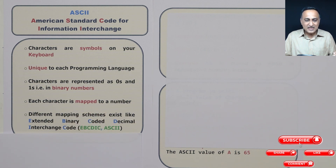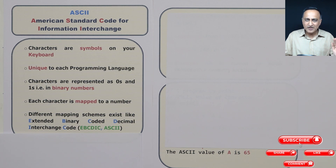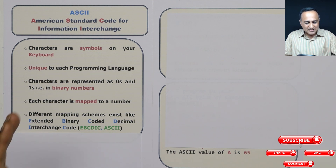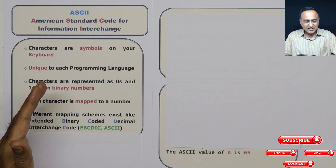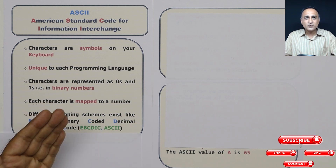There are different schemes used to map a character to a number. One such scheme is called EBCDIC, which stands for Extended Binary Coded Decimal Interchange Code. We're not really bothered about that because we're not going to use it very frequently. But we are going to talk about ASCII. ASCII stands for American Standard Code for Information Interchange, meaning it is used to represent characters internally using a certain combination of ones and zeros, which when converted to decimal will have a fixed value.